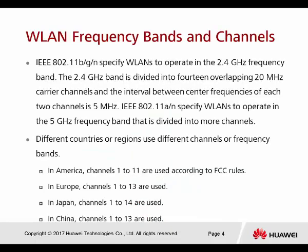IEEE 802.11 B, G, and N specified WLAN to operate in the 2.4 GHz frequency band. The 2.4 GHz band is divided into 14 overlapping 20 MHz carrier channels, so in the 2.4 GHz we have a total of 14 channels. All channels occupy 5 MHz each. For 802.11A, it is specified to operate in the 5 GHz frequency band, which is divided into even more channels than 2.4 GHz. Different countries or regions use different channels or frequency bands.